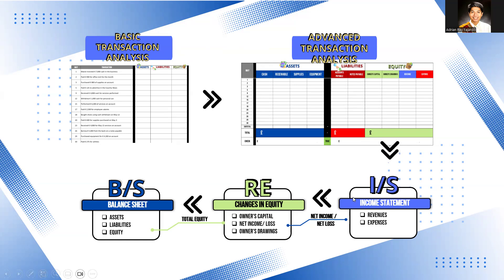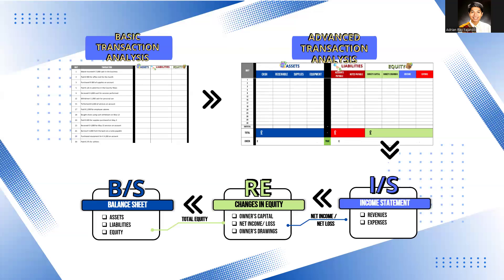Through the income statement, you'll be able to derive either your net income or your net loss. Once you know your net income or net loss, you can make your statement of changes in equity. This dives into the different components: your owner's capital, anything that adds or deducts from the beginning owner's capital, and your owner's drawings. At the end, what you get from the statement of changes in equity is the total equity balance.